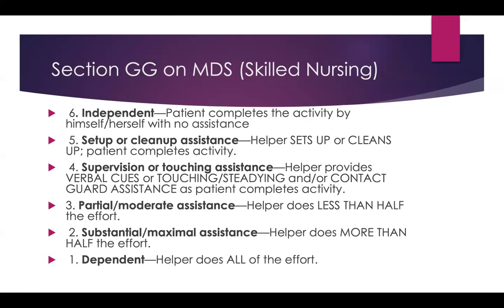Section GG on the MDS covers functional ability and goals. A score of 6 is independent — patient completes the activity by themselves with no assistance. A 5 is setup or cleanup assistance — helper sets up or cleans up, patient completes the activity. A 4 is supervision or touching assistance — helper provides verbal cues, steadying, or contact guard assist. A 3 is partial or moderate assist — helper does less than half the effort. A 2 is substantial or maximal assist — helper does more than half the effort. A 1 is dependent — helper does all the effort.